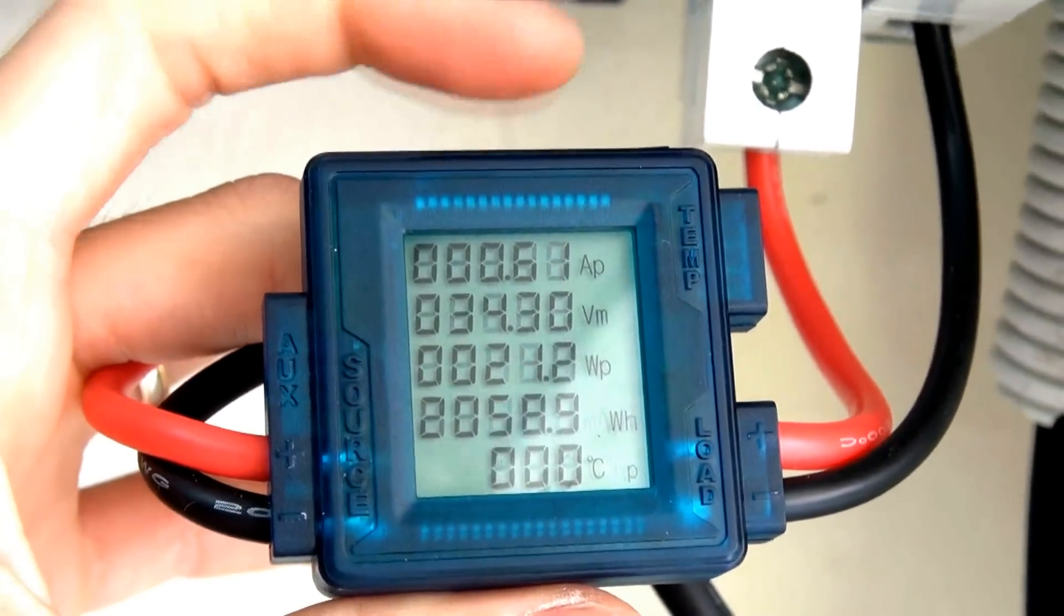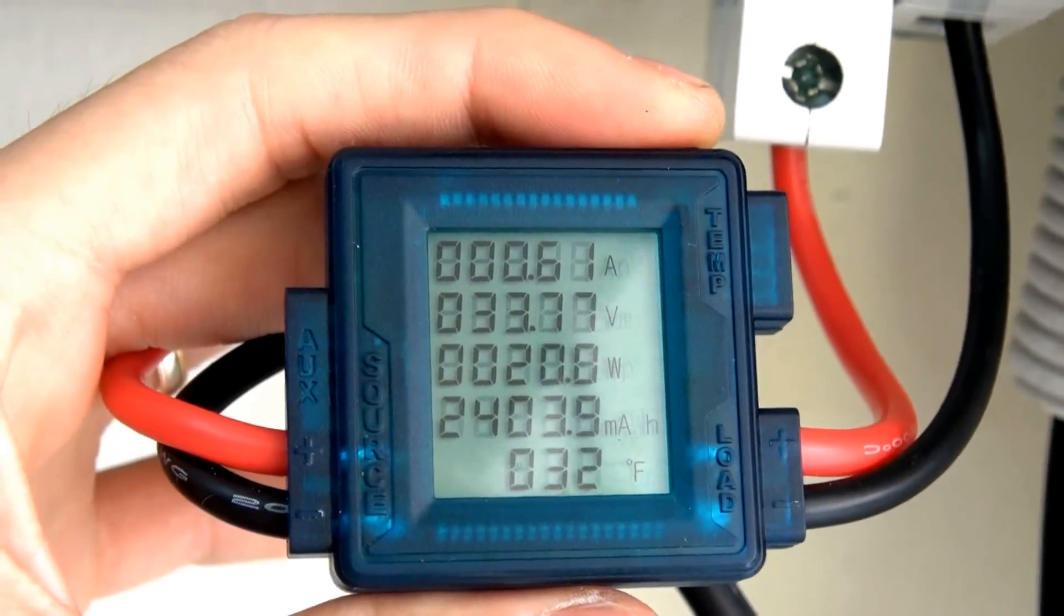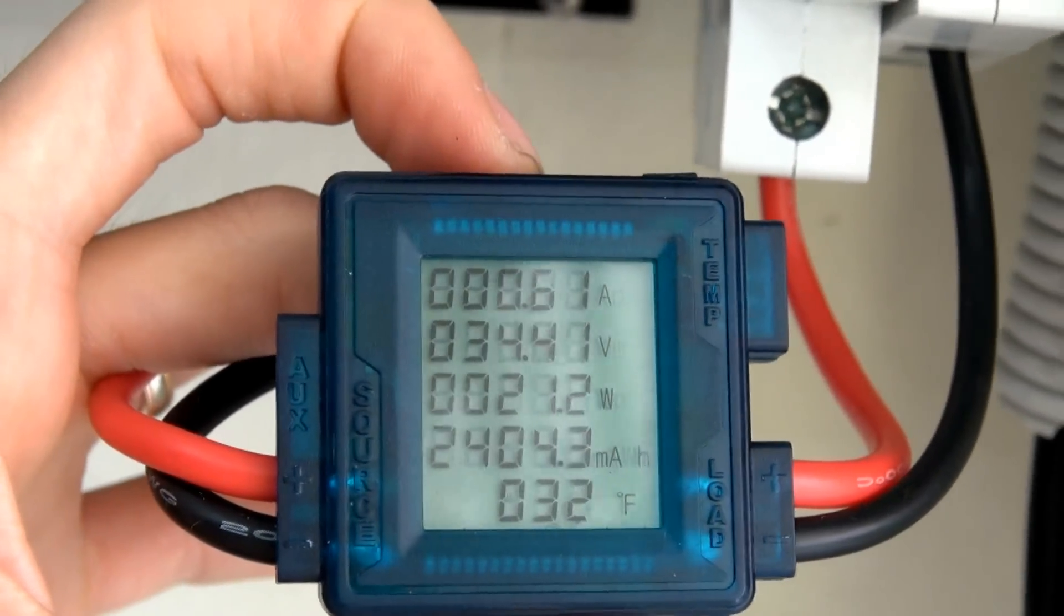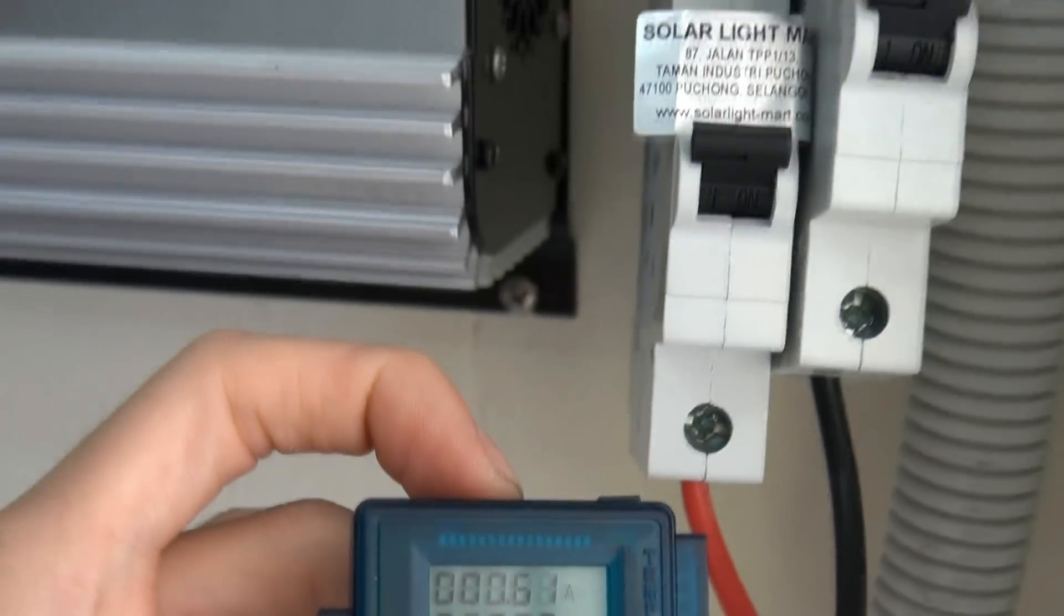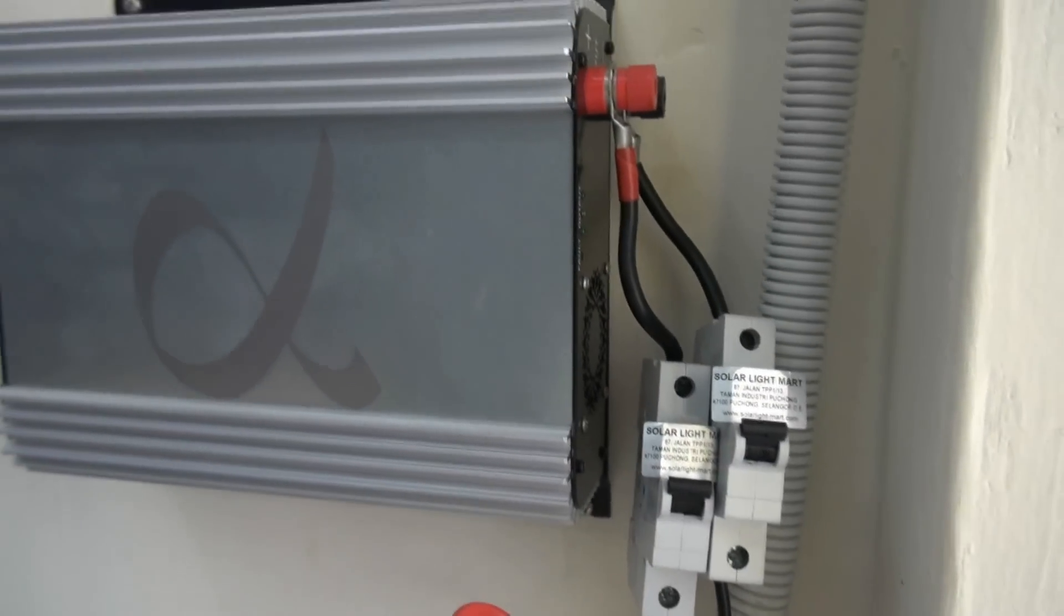So this is also one of the functions that you can use the watt meter for, is to measure the power output directly from the PV before it goes into an inverter or a charge controller.